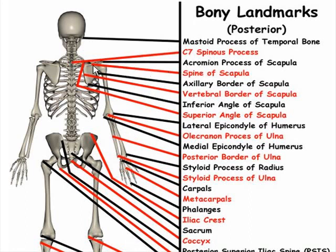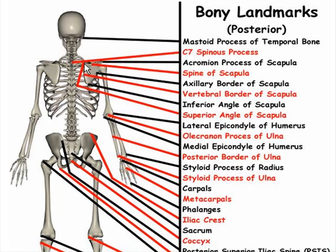Acromion process of the scapula, right here. Spine of the scapula, right here. Axillary border of the scapula, right here. Vertebral border of the scapula, right here. Inferior angle of the scapula, right here. Superior angle of the scapula, right here.